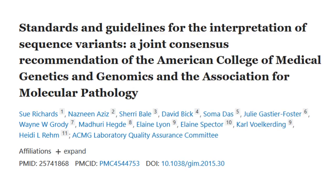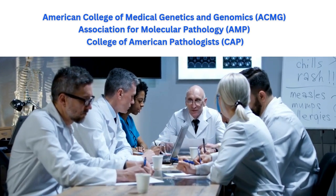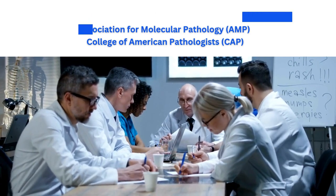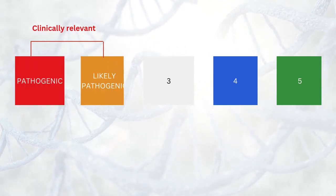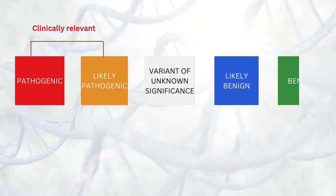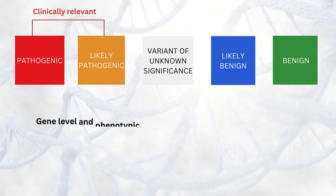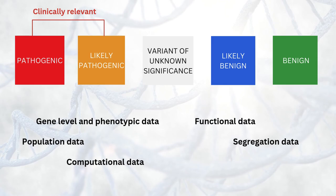The ACMG guidelines are internationally accepted guidelines for the interpretation of variants, established by clinicians and clinical lab directors who are experts in clinical genetics, part of the American College of Medical Genetics and Genomics, the Association for Molecular Pathology, and the College of American Pathologists. Variants can be classified into five tiers: pathogenic, likely pathogenic, uncertain significance, likely benign, and benign. Different types of evidence are collected including gene level and phenotypic data, population data, computational data, functional data, segregation data, and de novo data.